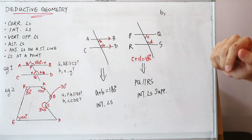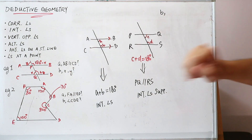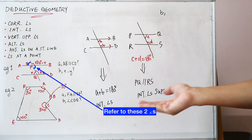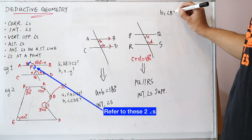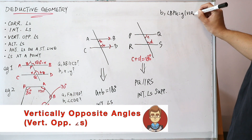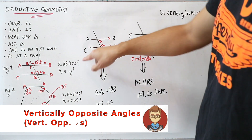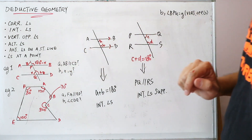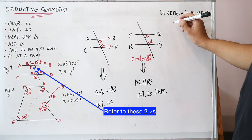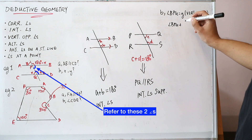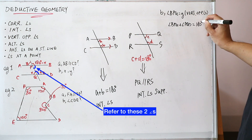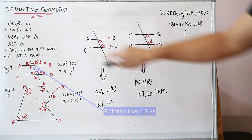For part B, you need to find the values of X and Y. First, angle Y is the same as angle BPQ because they are vertically opposite angles. So angle BPQ is equal to Y. And because from part A we know that AB and CD are parallel, angle BPQ plus angle PQD must equal 180 degrees. The reason is interior angles.